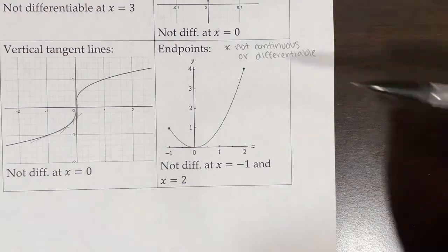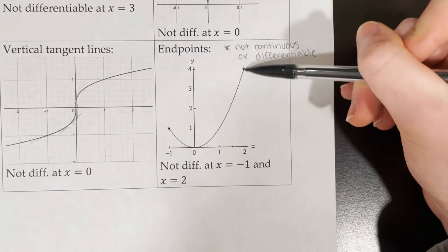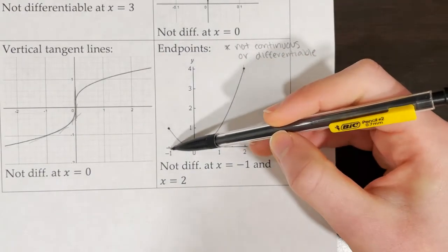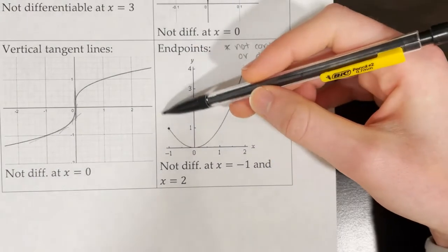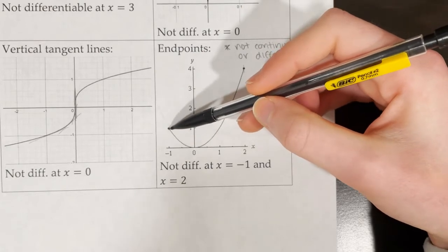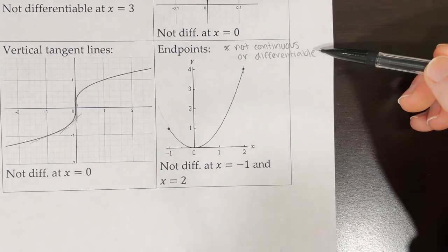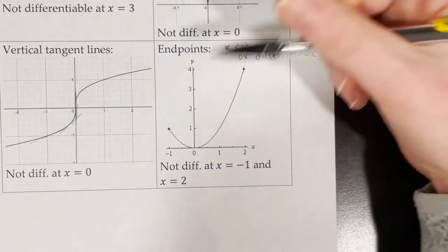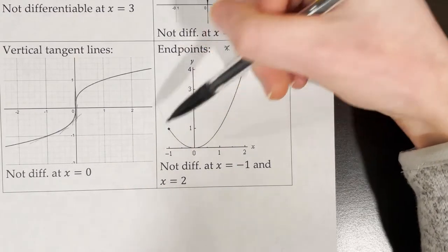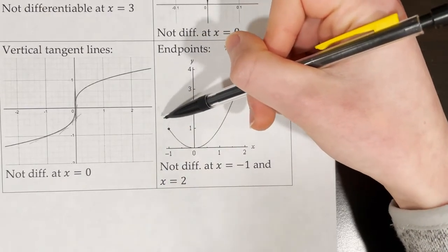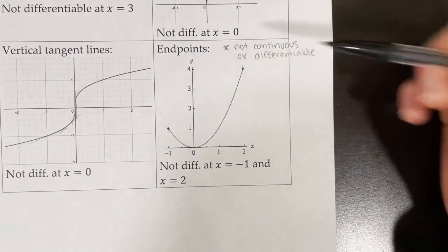The endpoints of a function are neither continuous nor differentiable. So at x equals negative 1 and at x equals 2, the function is not considered continuous because even though it's defined for x equals negative 1, there's no information about what's happening on the other side. We also have information about the slope of the tangent line as we approach from the right side, but no information about what the slope might look like on the other side. Therefore, the function is not differentiable at x equals negative 1 and at x equals 2.